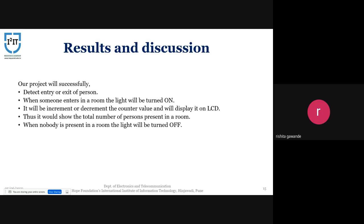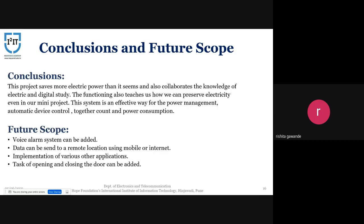In conclusion, this project saves more electric power than it seems and integrates knowledge of both electrical and digital study. We learned that we can conserve electricity even through a mini project. This system is an effective way for power management, automatic device control, people counting, and reducing power consumption. For future scope, we can add a voice alarm system to indicate when a room is full. We can also send data to a remote location using a mobile or the internet. By modifying the circuit and using two relays, we can achieve the task of automatically opening and closing the door.